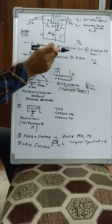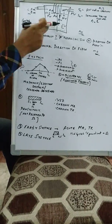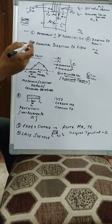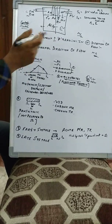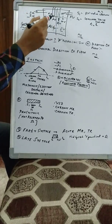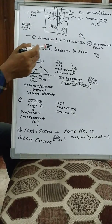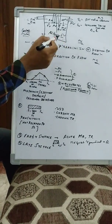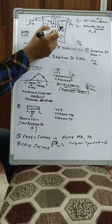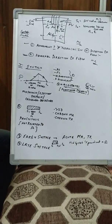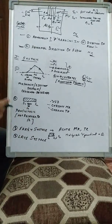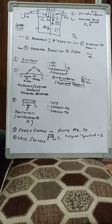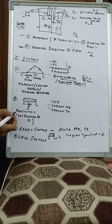Pan-systolic murmur also occurs in chronic MR and chronic TR. During systole, the AV valve should be closed so blood goes only into the aorta or pulmonary circulation. But in chronic MR or TR, the valve remains open during systole, allowing blood to flow back into the left atrium or right atrium — an abnormal direction causing a murmur. In chronic cases, the atrium is already dilated, so pressure gradient is maintained throughout systole, making it pan-systolic.